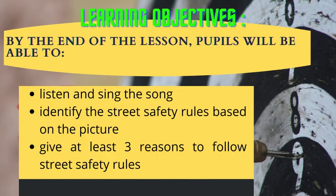Before we begin our lesson, let's look at our learning objectives. By the end of the lesson, pupils will be able to listen and sing the song, identify the street safety rules based on the pictures, and give at least three reasons to follow street safety rules. Are you ready?